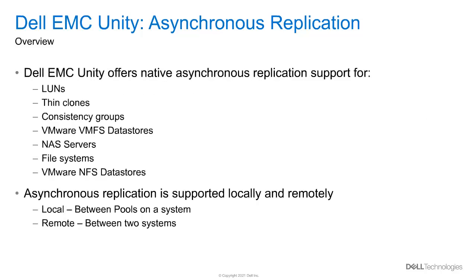Shown here is a list of resources that support asynchronous replication. Asynchronous replication can either occur between pools within the same system or over an Ethernet network between remote systems. For remote replication, the systems can either be physical, virtual, or a mix of the two.